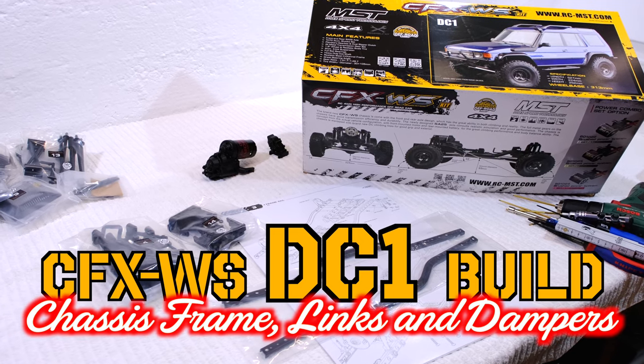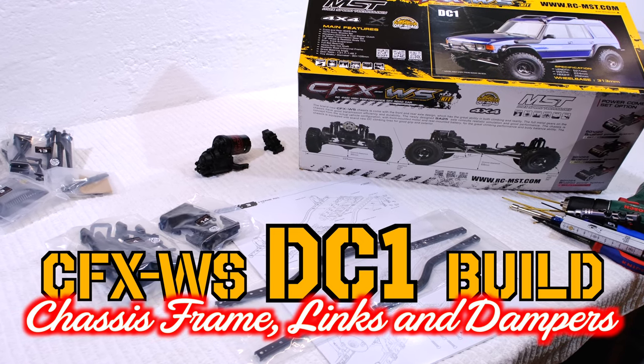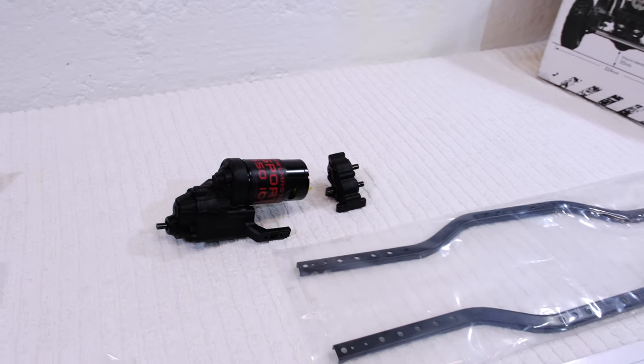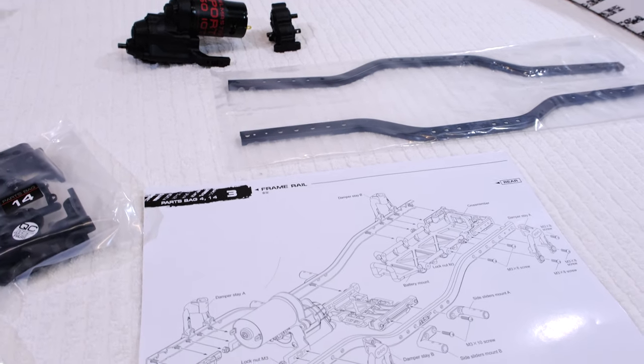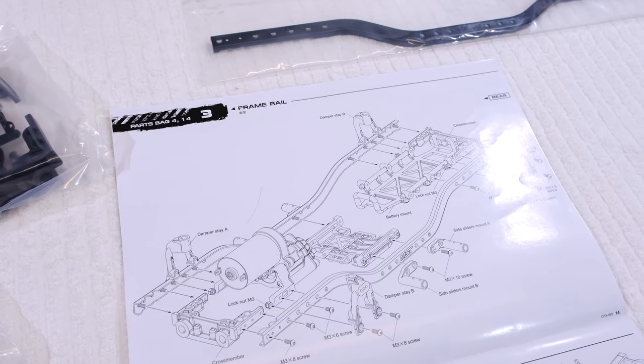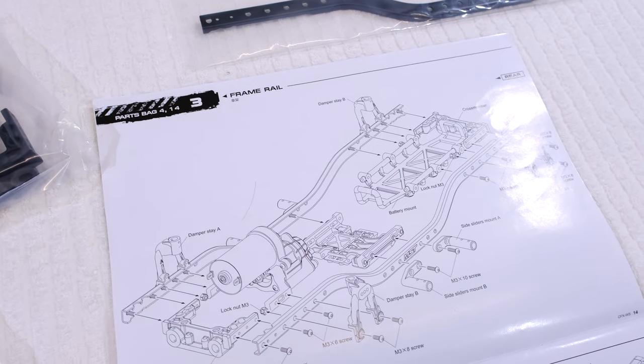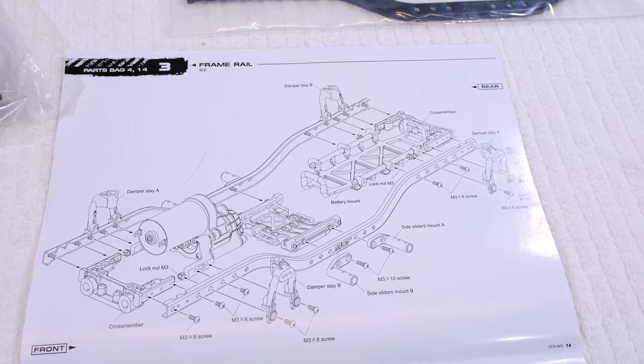I am here building the new DC-1 from MST. The gearbox and transfer case are already finished and the next step is to build the chassis frame. The parts for step 3 are in bags 4 and 14.